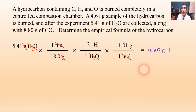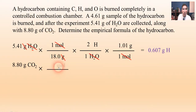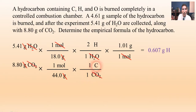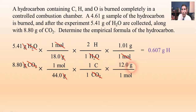Now let's do the same for carbon dioxide. We take 8.80 grams of CO2 and find how many grams of carbon are in it. Step one: convert to moles — 1 mole over 44.0 grams of CO2, grams cancel. Step two: mole ratio — carbon on top, CO2 on bottom; it's a one-to-one ratio. Step three: convert to grams — 12.0 grams per mole of carbon. After multiplying and dividing, we find that there are 2.40 grams of carbon.